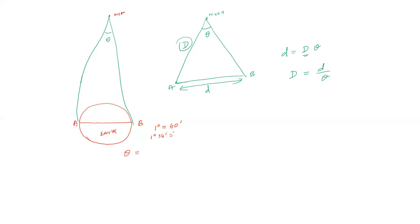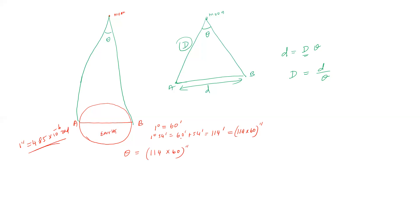1 degree 54 minutes: 1 degree equals 60 minutes, so total is 114 minutes. Converting 114 minutes into seconds: 114 × 60 seconds. Then converting to radians: 1 second equals 4.85×10⁻⁶ radian. So 114 × 60 × 4.85×10⁻⁶ = 3.32×10⁻² radian.